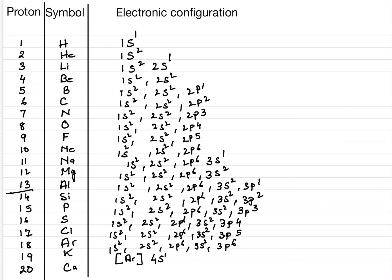Likewise, for calcium we write [Ar] 4S2. Argon is 18 electrons, so 18 plus 2 gives us 20. So this covers the first 20 elements.